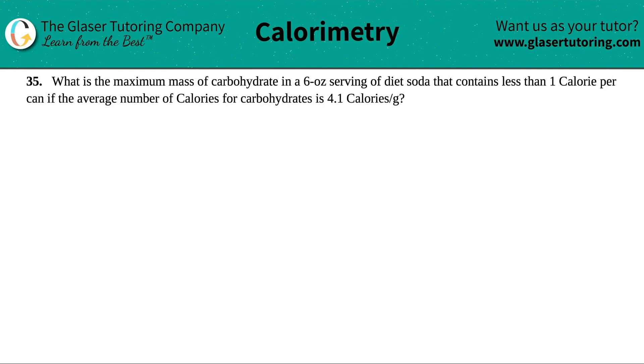Number 35, what is the maximum mass of carbohydrate in a six ounce serving of diet soda that contains less than one calorie per can if the average number of calories for carbohydrates is 4.1 calories per gram?